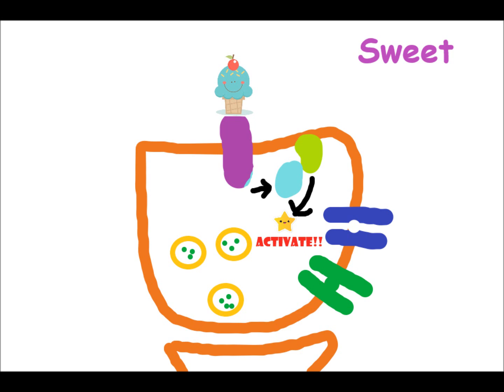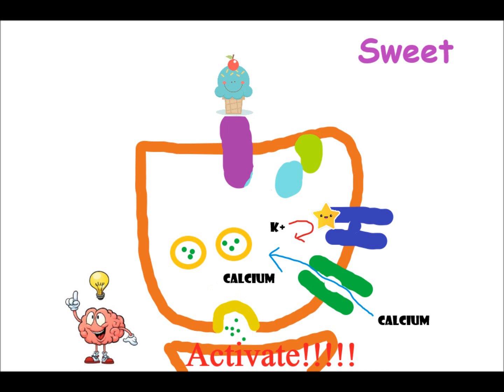This kinase then closes the gate for a channel that was allowing potassium to leave the receptor. Since potassium can't leave, this changes the condition inside the receptor, which leads to the opening of calcium channels. Now, with an influx of calcium, the neurotransmitter sacs can fuse and release their contents. This results in a signal that tells the brain that the food is sweet.